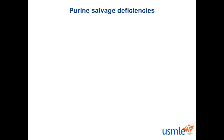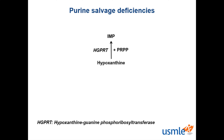First, let's go over how nucleotides are broken down. For the Step 1 exam, it's most important to know how to break down purines. To make purines, we start by adding hypoxanthine to PRPP, or phosphoribosyl pyrophosphate, in order to make IMP, which stands for intermediate ribonucleoside monophosphate. HGPRT, which stands for hypoxanthine guanine phosphoribosyl transferase, is an enzyme that catalyzes this reaction. The enzyme name tells you what it does — we're transferring a hypoxanthine onto a ribose that has a phosphate on it, which is PRPP.